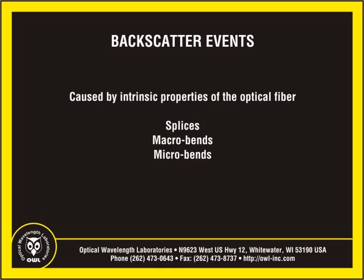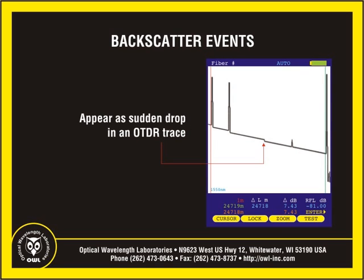Backscatter events are caused by the intrinsic properties of the optical fiber. The makeup of the optical fiber scatters light in all directions, with only a small portion of the light returning back towards the OTDR. Common backscatter events are splices, macro bends, and micro bends. Backscatter events appear as sudden drops in the slope of an OTDR trace.